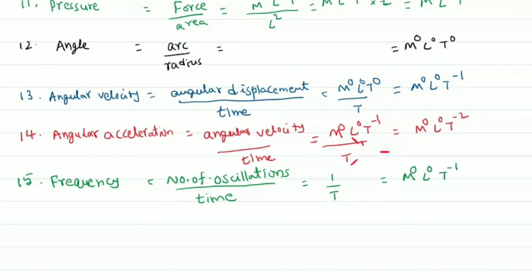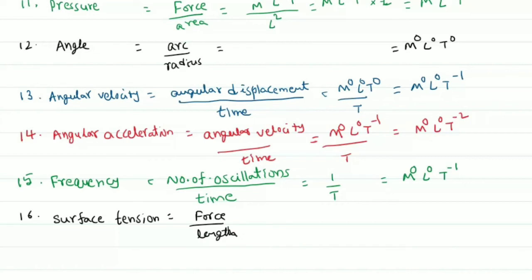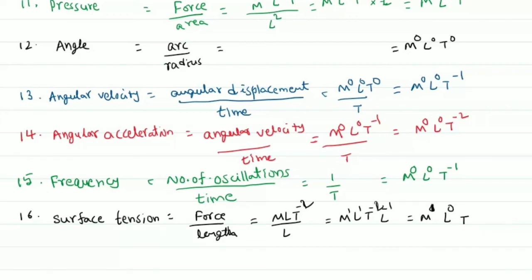Next is surface tension. Surface tension is also a type of force — it is force per unit length. Force has dimensions M power 1, L power 1, T power minus 2, and dividing by length L power 1 gives M power 1, L power 0, T power minus 2.